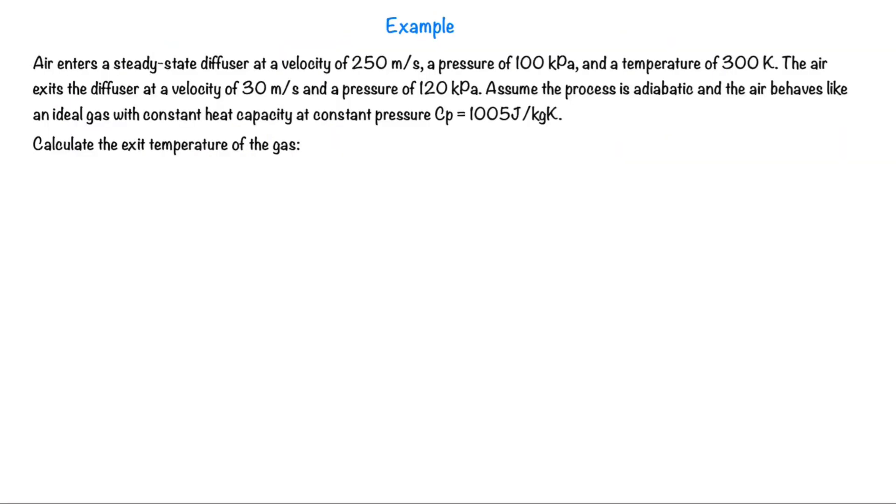Let's look at an example question. Air enters a steady state diffuser at a velocity of 250 meters per second, a pressure of 100 kilopascal and a temperature of 300 Kelvin. The air exits the diffuser at a velocity of 30 meters per second and a pressure of 120 kilopascal. Assume the process is adiabatic and that the air behaves like an ideal gas with a constant heat capacity at constant pressure Cp = 1005 joules per kilogram Kelvin. Calculate the exit temperature of the gas.